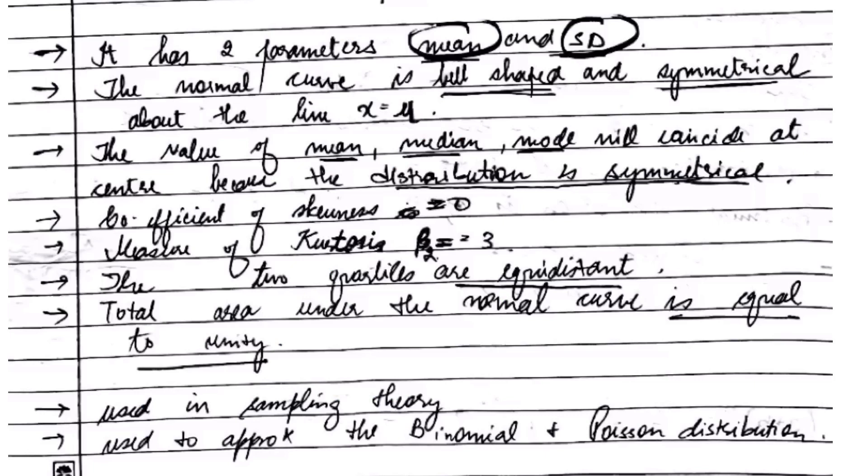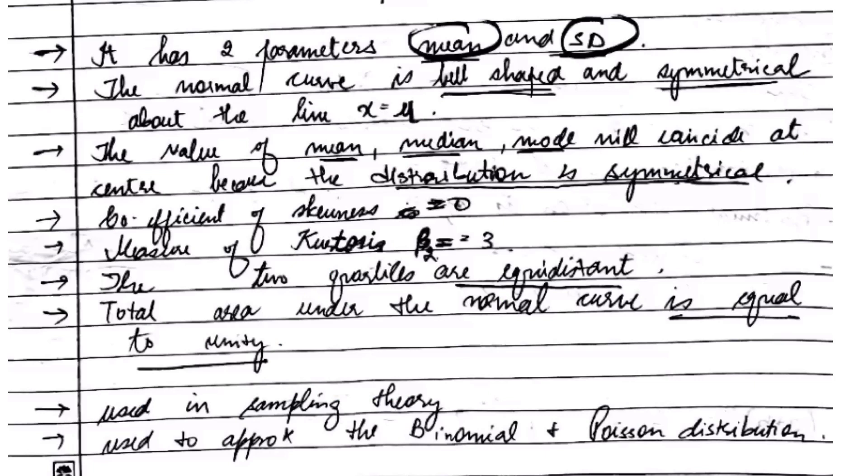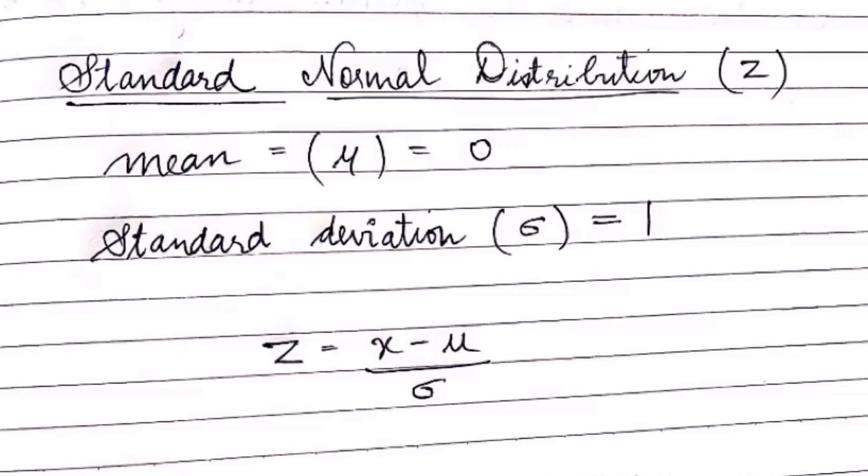The total area under the curve is one. Normal distribution can be used in sampling theory and can be used to approach the binomial and Poisson distribution. The z value, that is the normal distribution value, is z = (x - μ)/σ, where μ is the mean and σ is the standard deviation, and z means the standard normal distribution. For numerical part you can see in the description box. I have shared several links you can use to solve the numerical part.